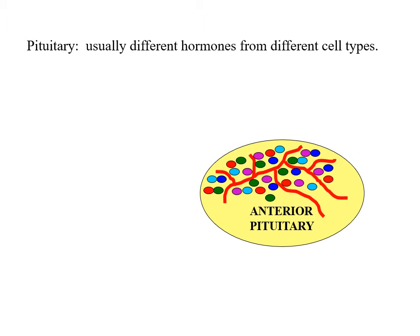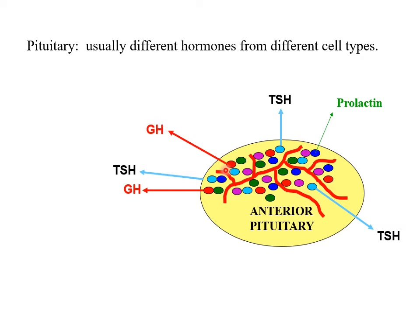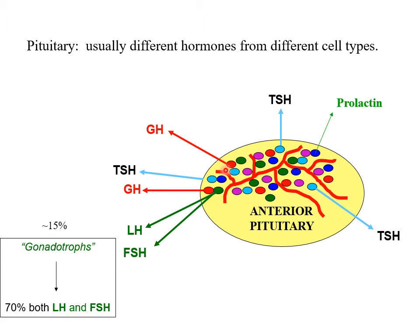Let's look at the anterior pituitary first. It contains a variety of cell types and normally each cell type secretes one of the different anterior pituitary hormones — TSH, prolactin, growth hormone — and then a population of cells which secrete both LH and FSH. They're called gonadotrophs because they're secreting the two hormones which are gonadotrophins, LH and FSH. They're called gonadotrophins because they stimulate — they're trophic to — the gonads.